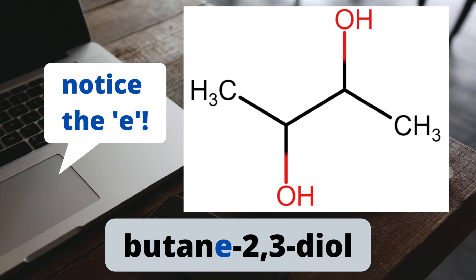When we have multiple alcohol groups on a single molecule, we reincorporate the E after the AN in our naming. For example, this is butane-2,3-diol.